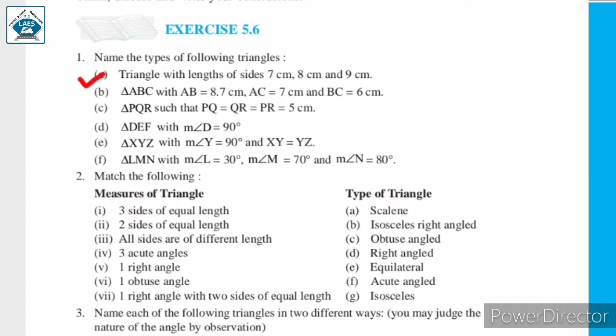First, a triangle with lengths of sides 7 cm, 8 cm, and 9 cm. Here, we can observe that the given measurements show that the triangle has unequal sides — no two sides of the triangle are equal. So, this triangle is a scalene triangle.